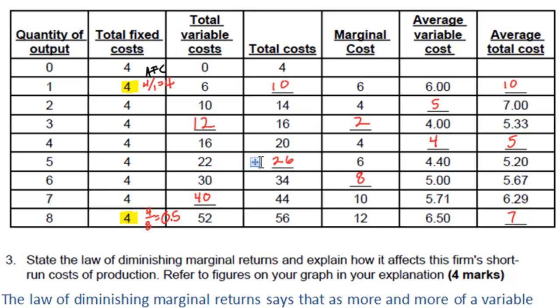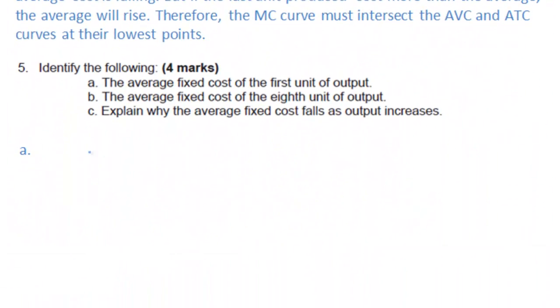Now we want to explain why average fixed cost decreases as the output increases in the short run.